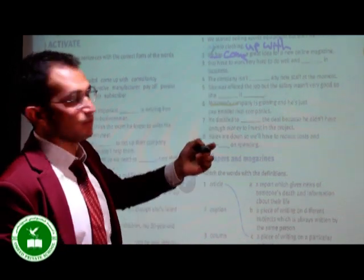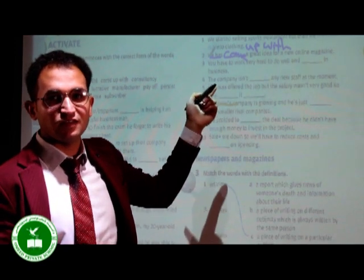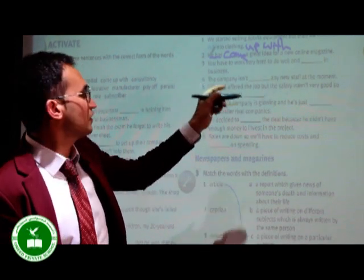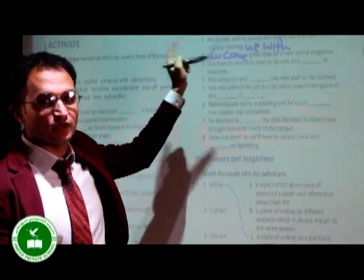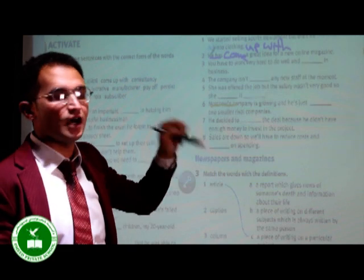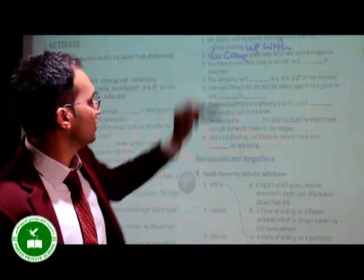He has come up with a great idea for an online magazine. See? In here, has and we have come. What kind of tense is this? It's present perfect tense. Has plus phrasal verbs. As you use the phrasal verbs of come. Again, it is come. Come, came, come.